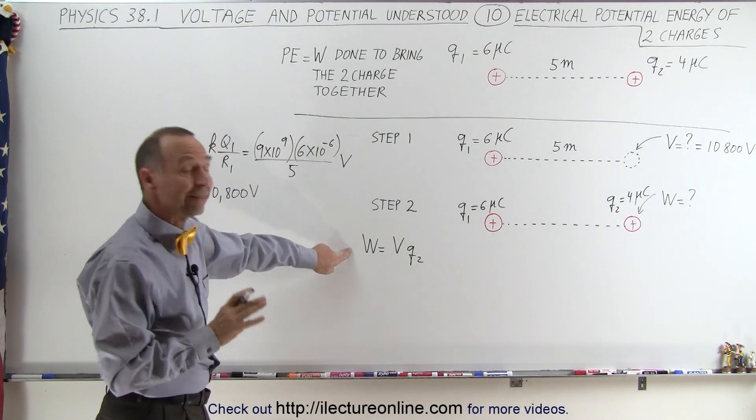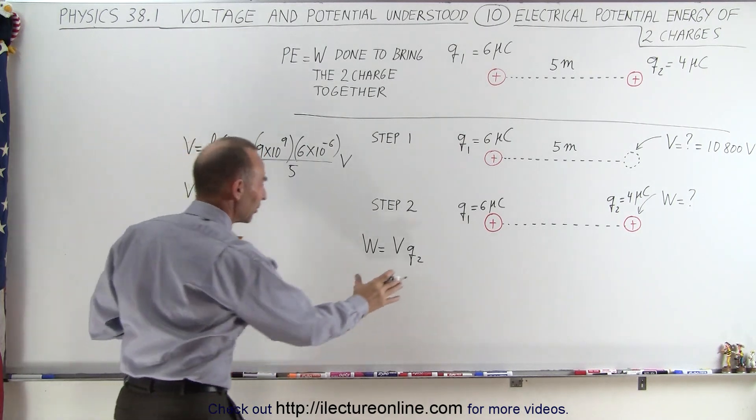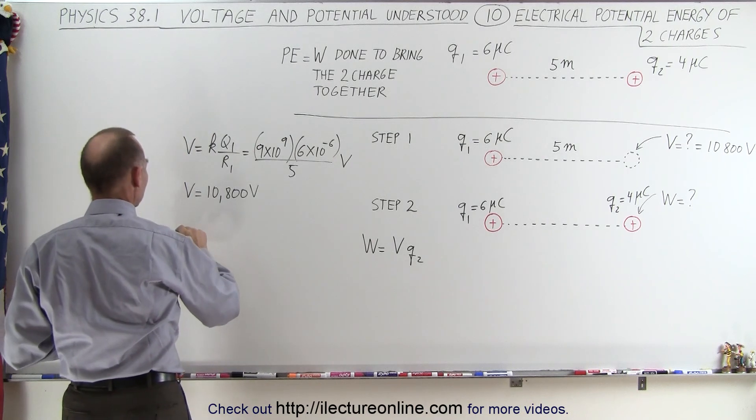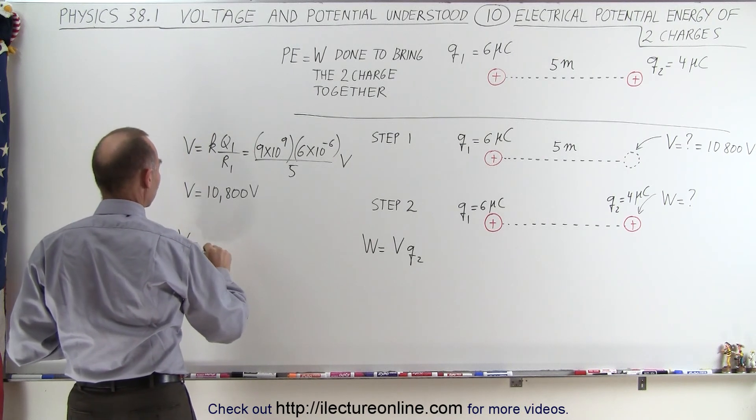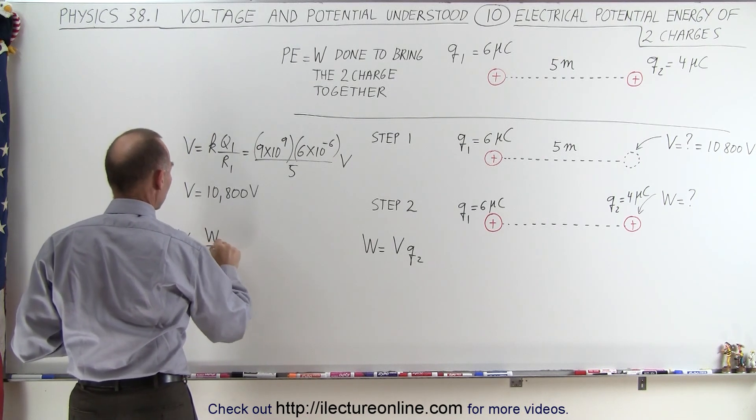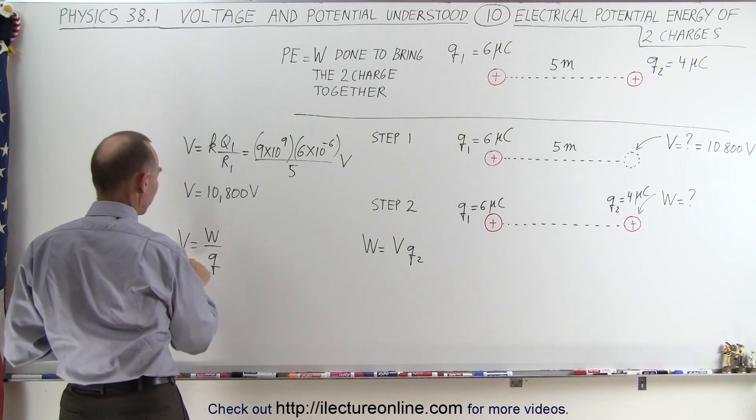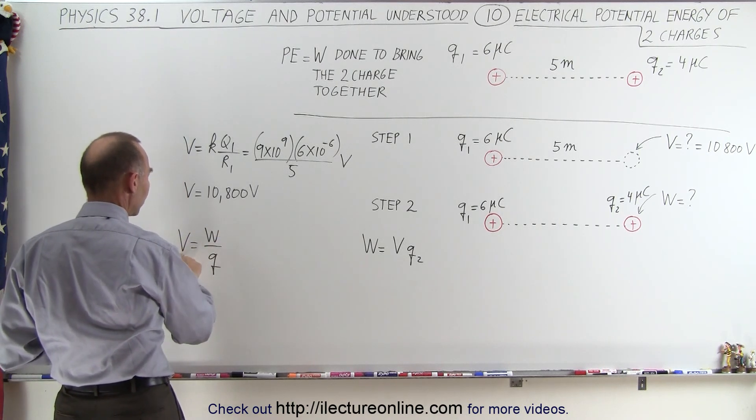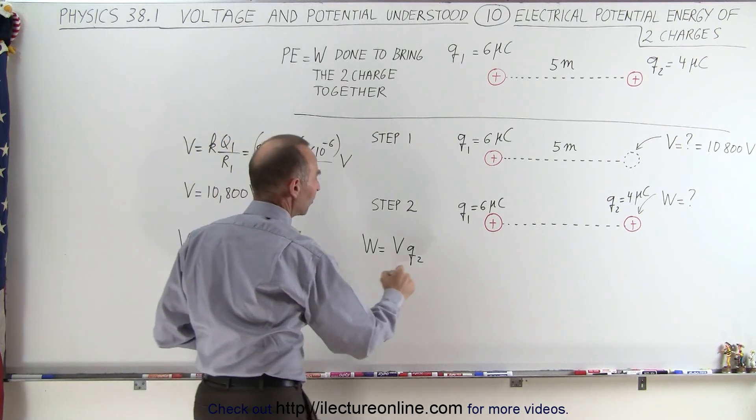Now, where this came from was from the definition that the potential is equal to the work done to place a charge there divided by the size of the charge. So simply solving this for the work done, it's voltage times the charge, and in this case,